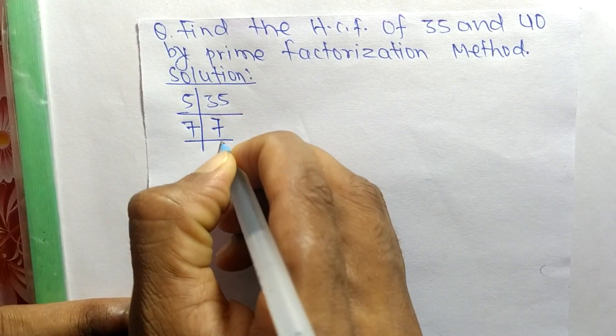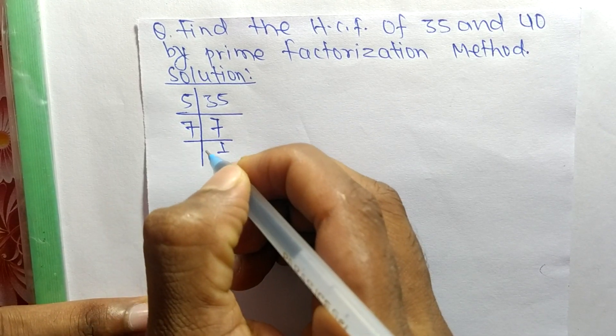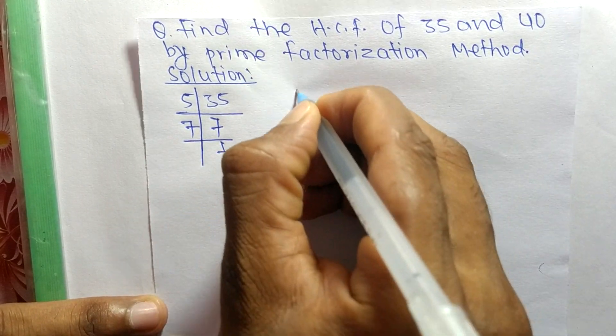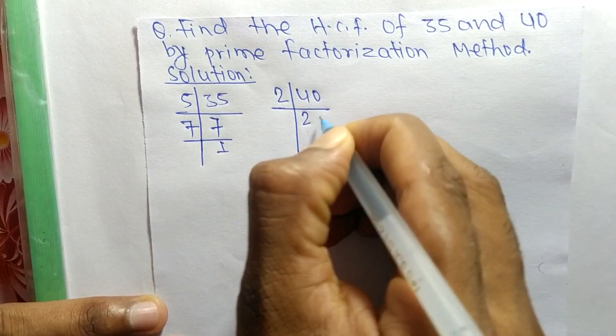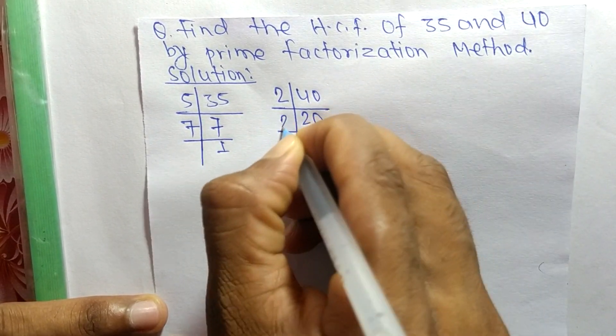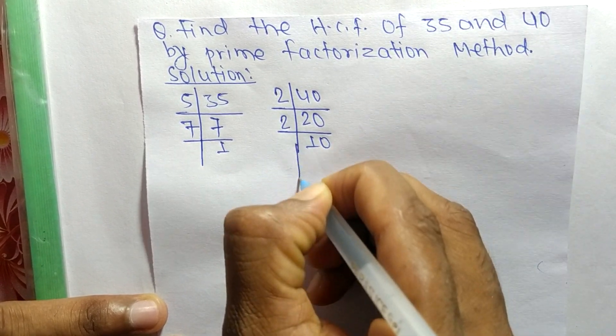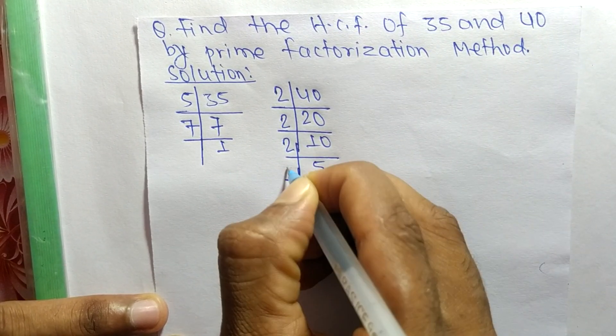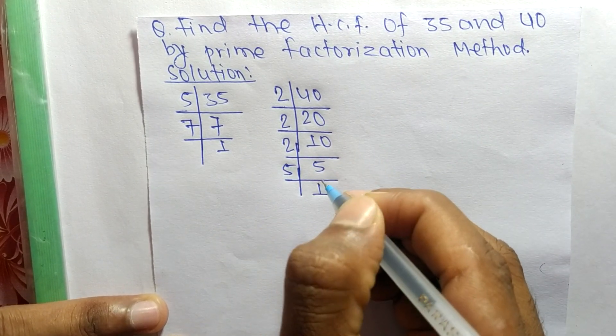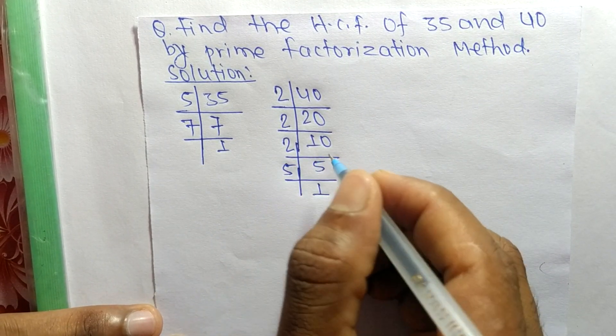Likewise, the prime factors of 40 are 2 times 20 equals 40, 2 times 10 equals 20, 2 times 5 equals 10, and 5 times 1 equals 5.